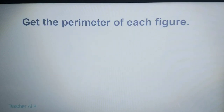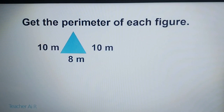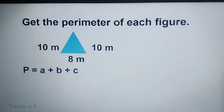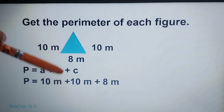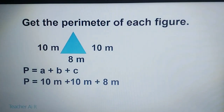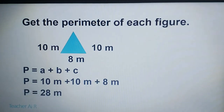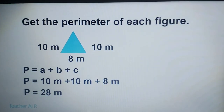Let's have some drill. Get the perimeter of each figure. We have a triangle with measurements shown. The formula is P equals A plus B plus C. So just add 10 plus 10 plus 8, which gives us 28. That's how you solve for the perimeter of the triangle — just add all the sides: A plus B plus C.